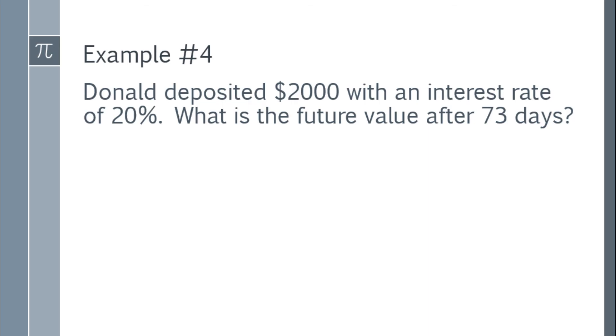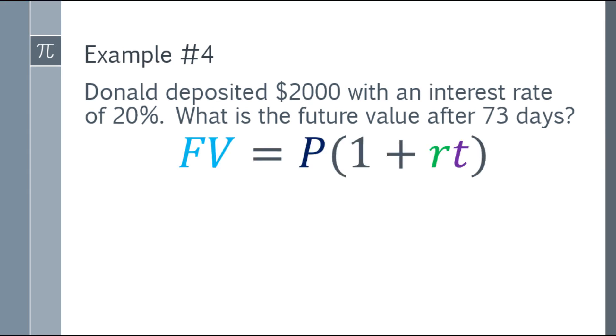Okay, so example number 4. Donald deposited $2,000 with an interest rate of 20%. What is the future value after 73 days? Okay, this one, we have the principal, we have the rate, and we also have the time. But this one, we're in days. So it won't be too difficult, don't worry. So we have the formula: future value is equal to principal times the quantity 1 plus RT.